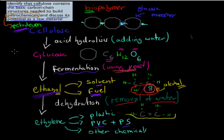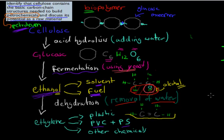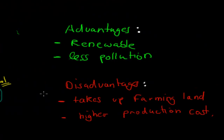So using biomass, we can make the same petrochemicals as we could using petroleum. Now let's discuss its potential as a raw material — we need to give advantages and disadvantages, the pros and cons of using cellulose as opposed to petroleum.